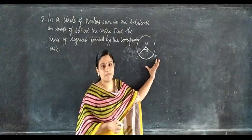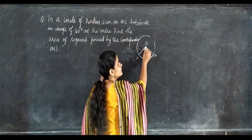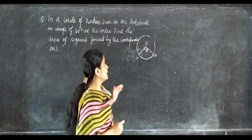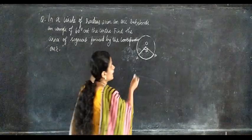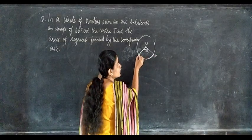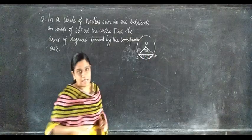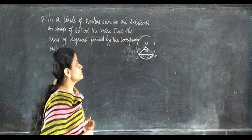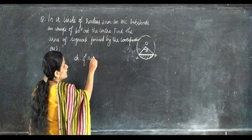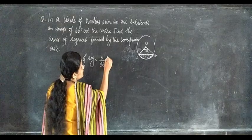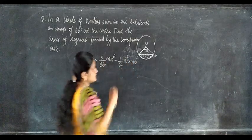Here, AB is the arc. The segment means the region between the chord and the arc — so we have to find this area, the area of the segment. We know the formula: area of segment equals theta by 360 into π r square minus half r square sine theta.